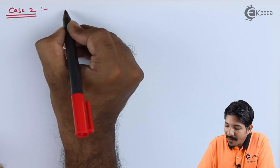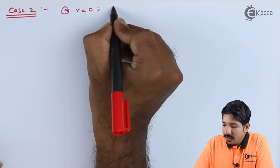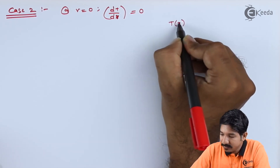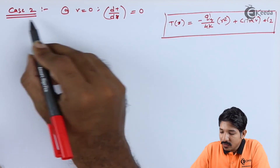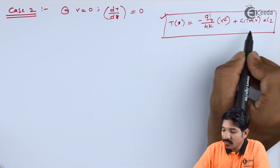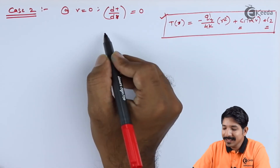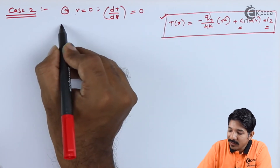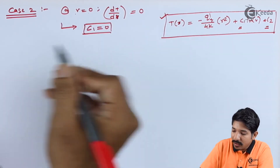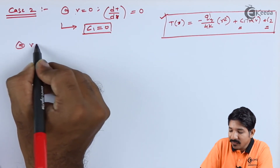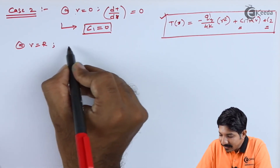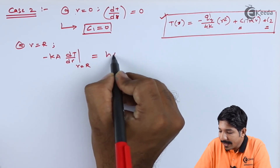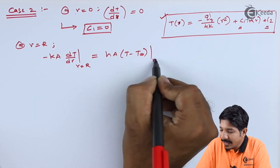Now let us go to the second case. The boundary conditions are: at r = 0, dT/dr = 0, and at r = R, -k A dT/dr = h A [T(R) - T∞]. From the first boundary condition, as seen previously, C₁ = 0.